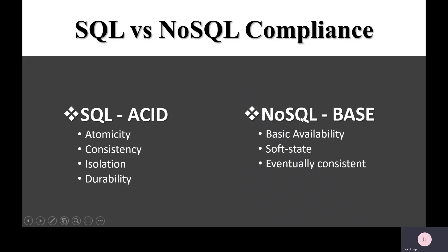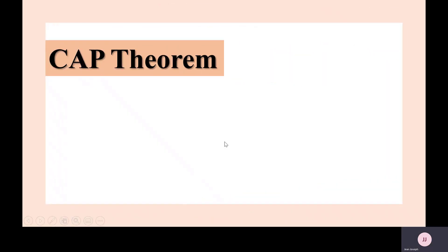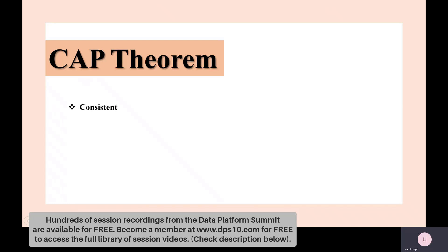You cannot talk about NoSQL without understanding the CAP theorem. C stands for Consistency: all replicas contain the same version of data, and clients always have the same view of the data regardless of which node they hit. A stands for Availability: the system remains operational on failing nodes, and all clients can always read and write. P stands for Partition Tolerance: the system remains operational during network splits or communication malfunctions.